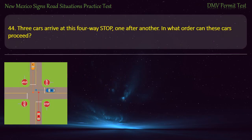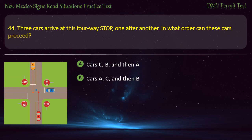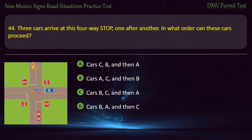Question 44. Three cars arrive at a four-way stop one after another. In what order can these cars proceed? Options: Cars C, B, and then A; Cars A, C, and then B; Cars B, C, and then A; or Cars B, A, and then C. Answer: Cars B, A, and then C.